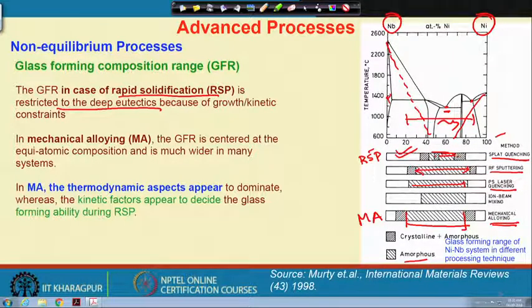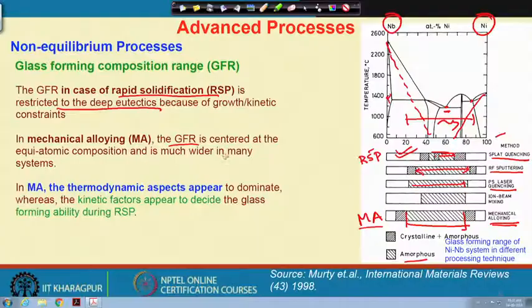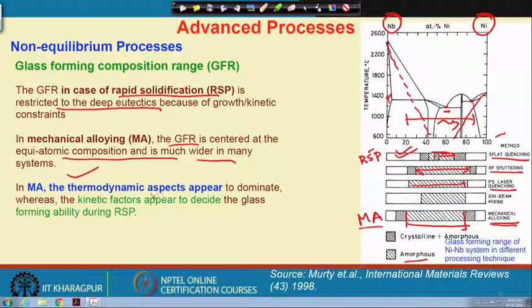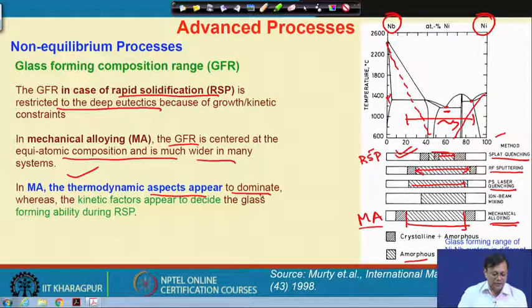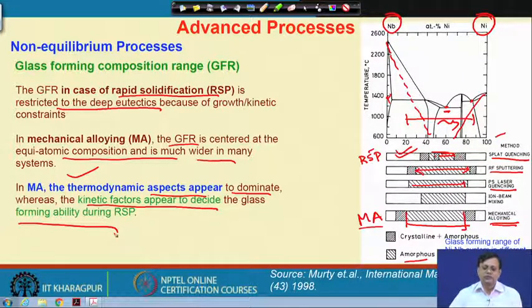In mechanical alloying, a crystal undergoing excessive alloying or super-saturation has its free energy rise above that of the amorphous phase, and therefore the crystal transforms into a glassy phase. The glass forming range at the equiatomic composition is much wider via mechanical alloying. Thermodynamic aspects dominate glass forming in mechanical alloying, whereas kinetic factors determine glass forming during rapid solidification processing.